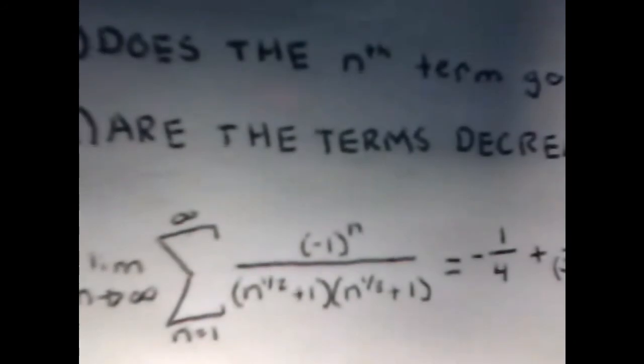For condition two, are the terms decreasing? Yes, they are. They are getting closer and closer to one over infinity, which approaches zero, making this series converge conditionally.